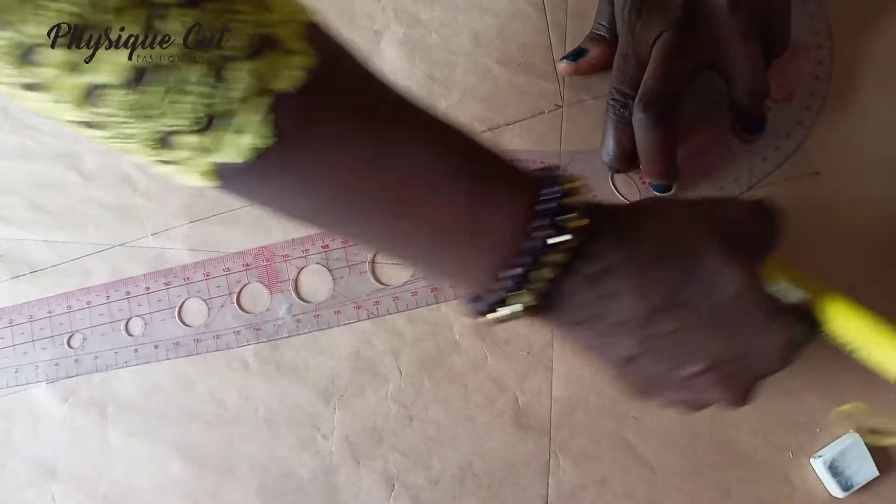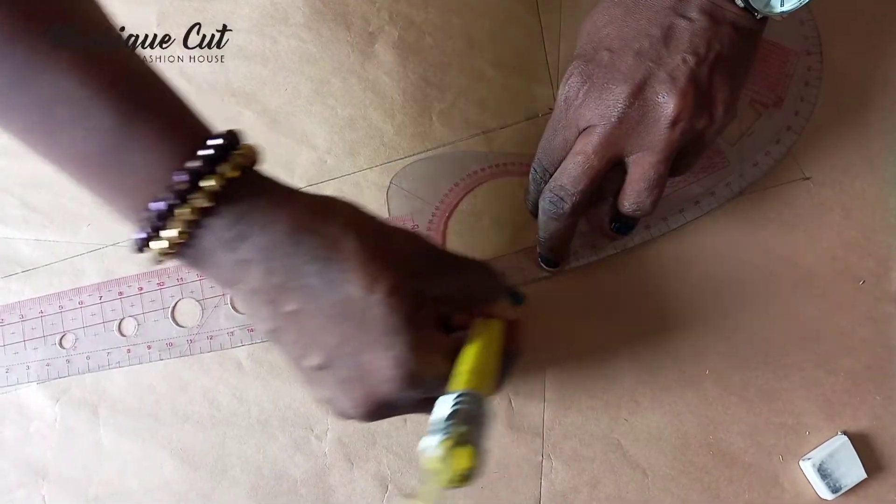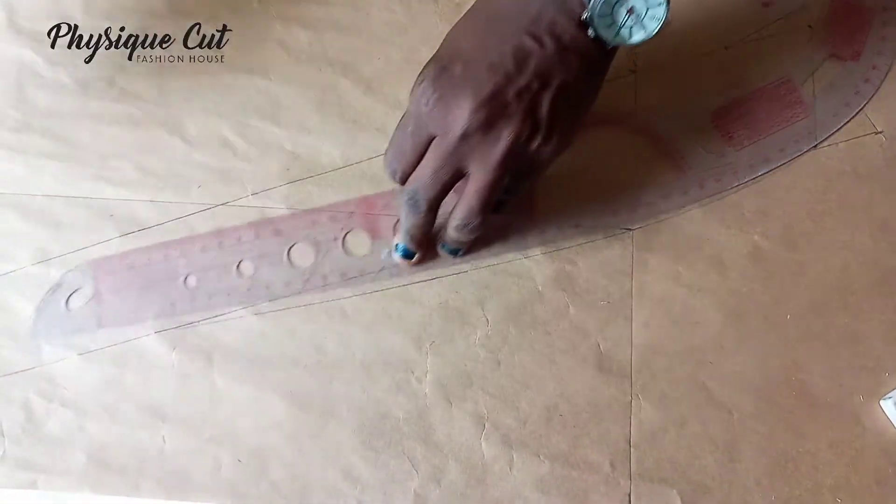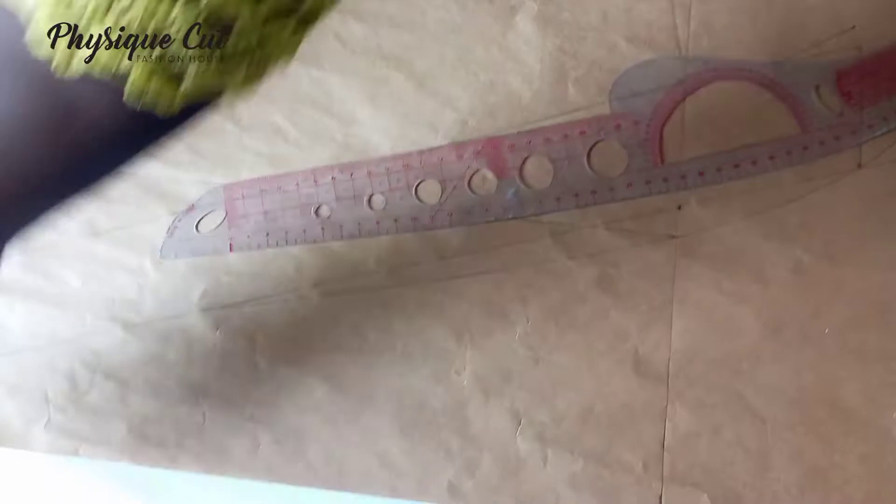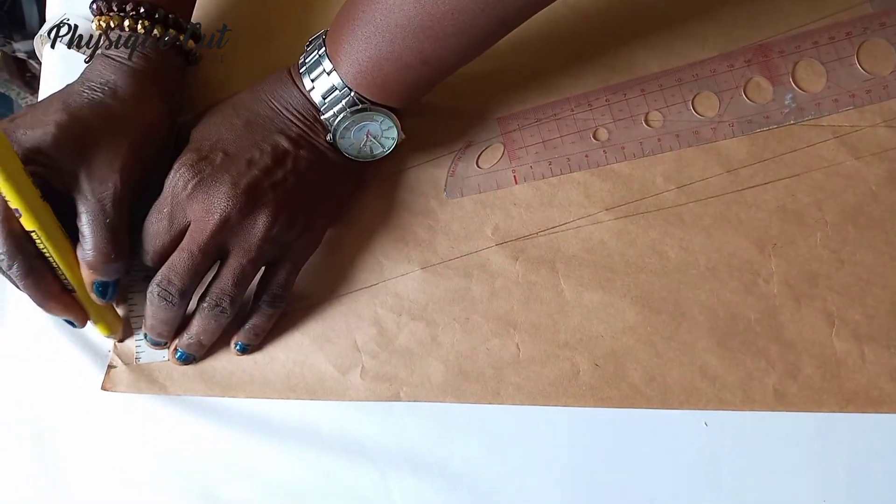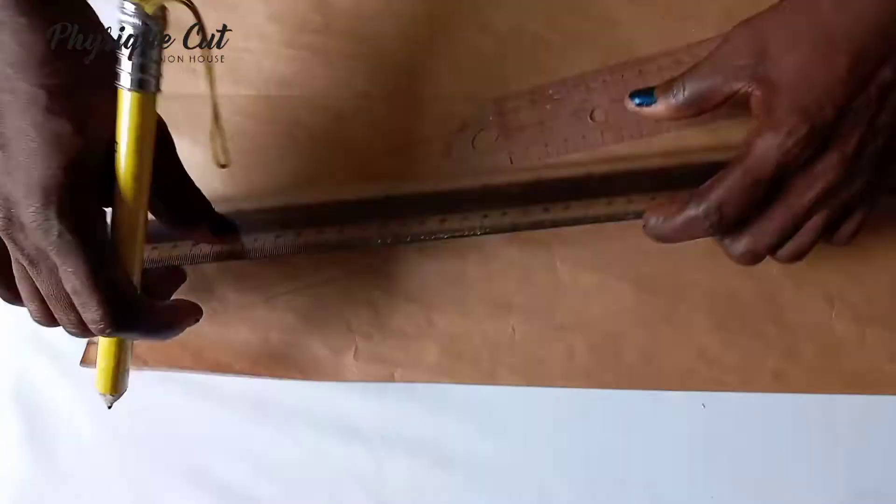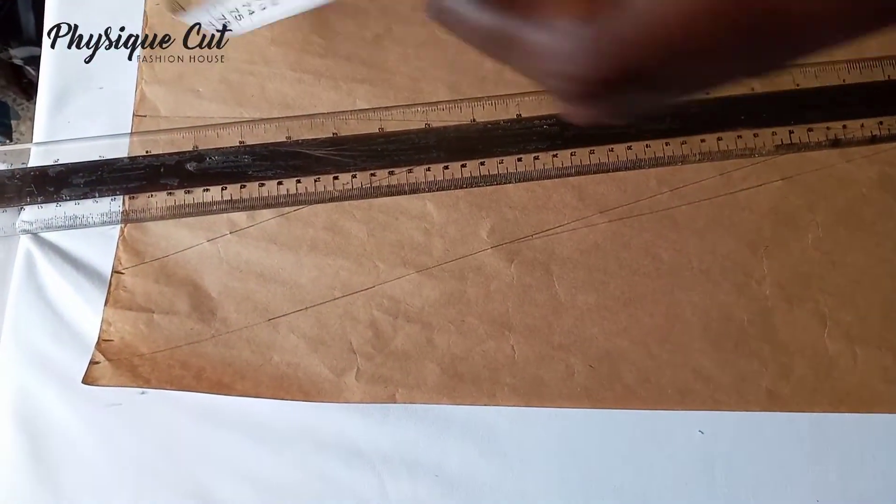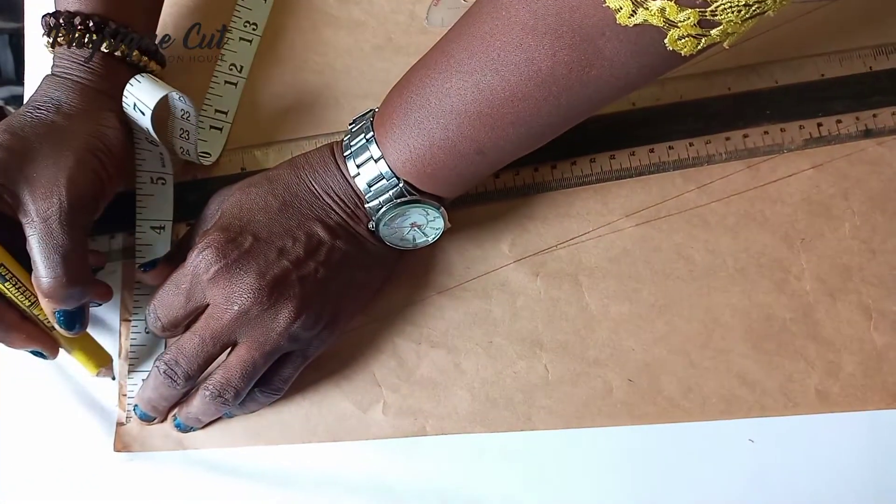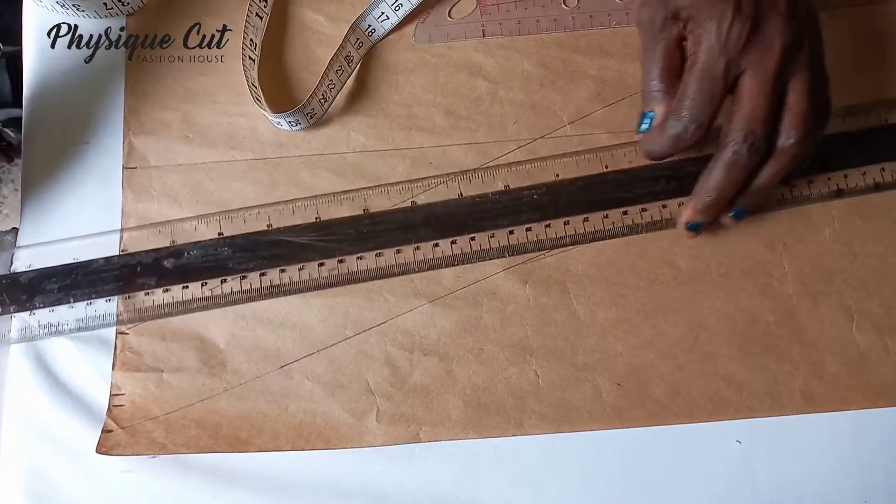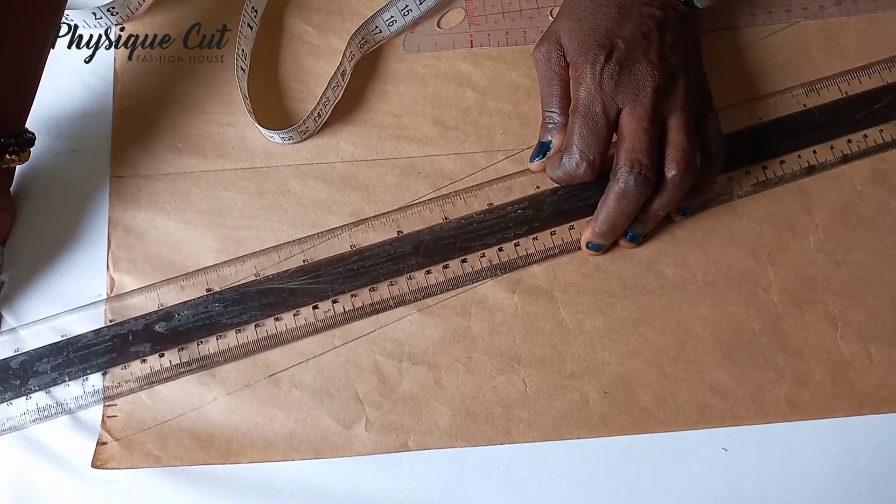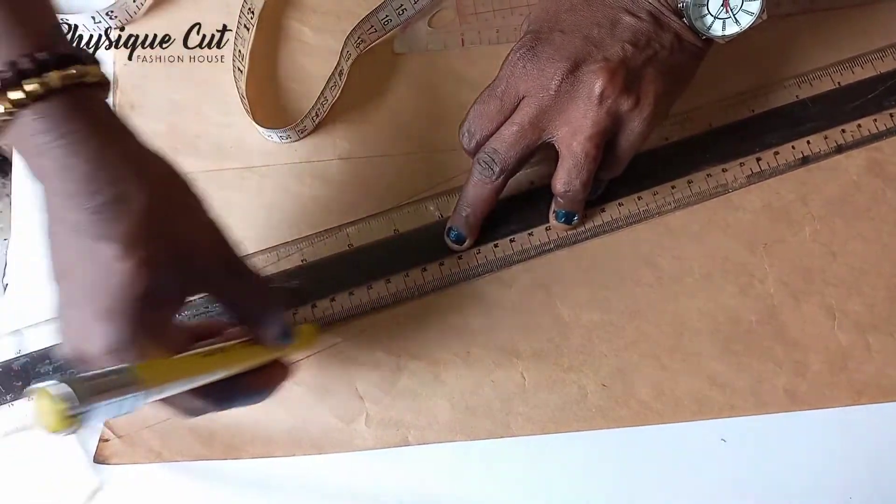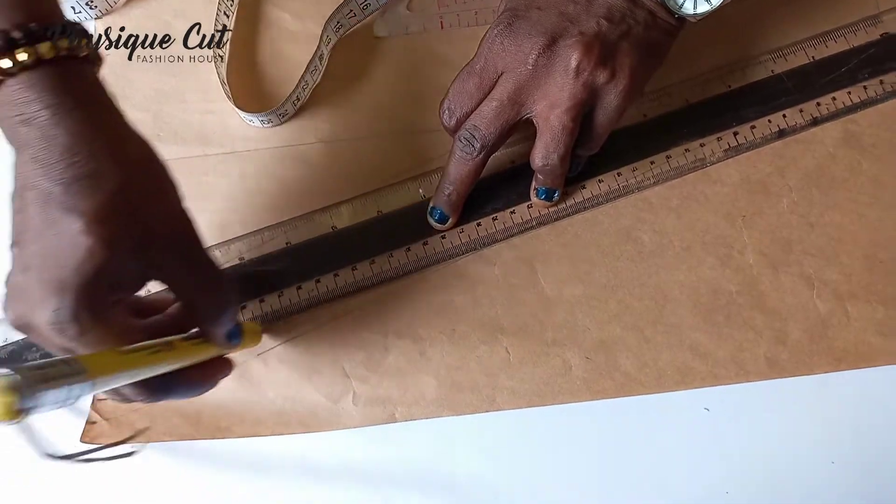Then here, down here, you come in by like three-quarter because we want our collar to be thinner at the bottom part there. That's what we are trying to achieve.